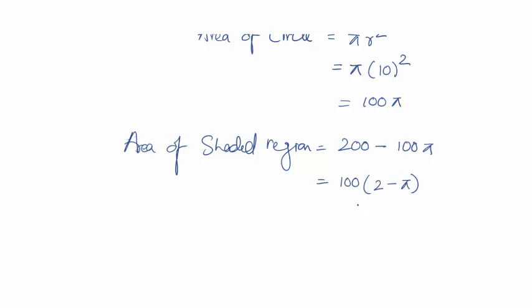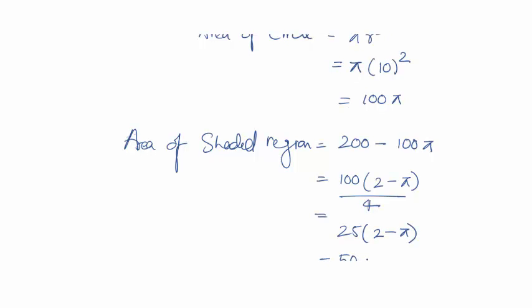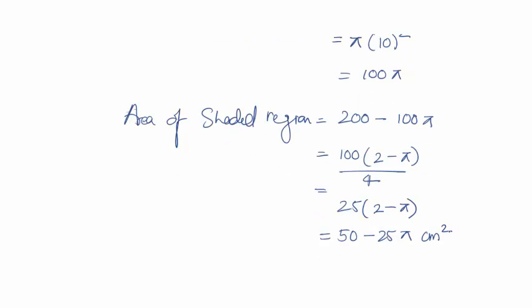This is the area of the 4 parts. Now we have to divide it by 4 in order to get the answer, that is 25 times 2 minus pi, which gives us 50 minus 25 pi centimeter square.